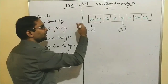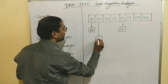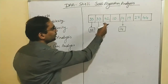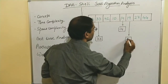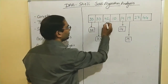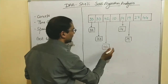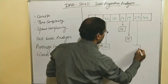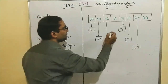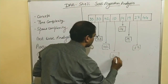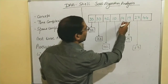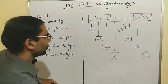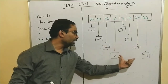We then take the next element, 33, and find its pair at interval 4, which is 90. Next, we take 42 and its pair at interval 4 is 27. Finally, we take 10 and its pair at interval 4 is 44. So we have 4 sublists in total.